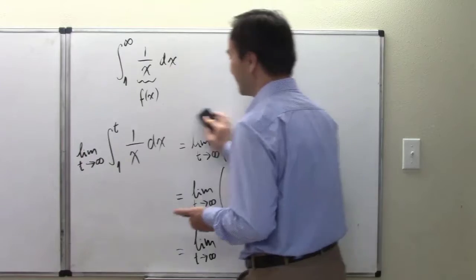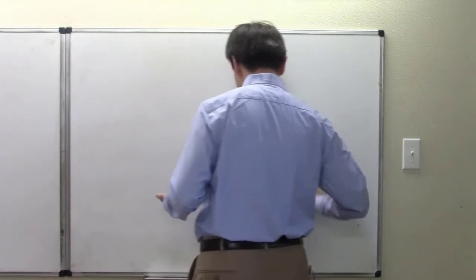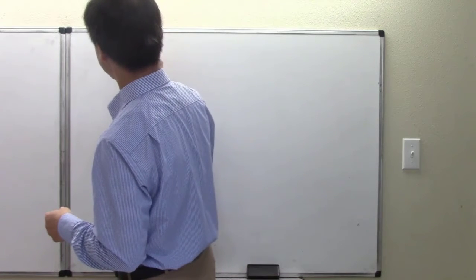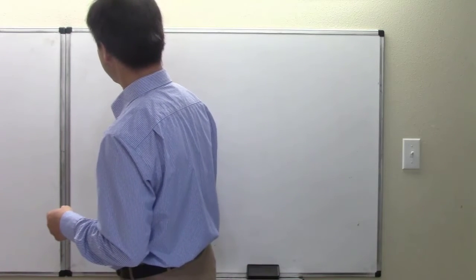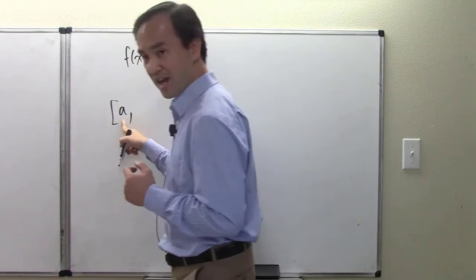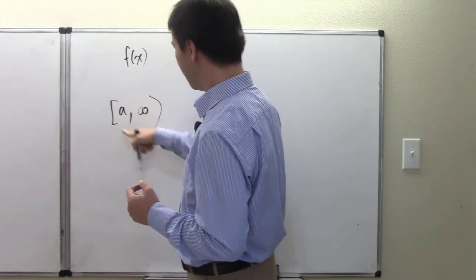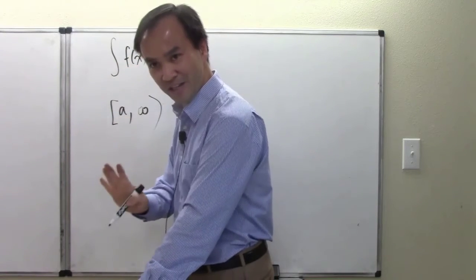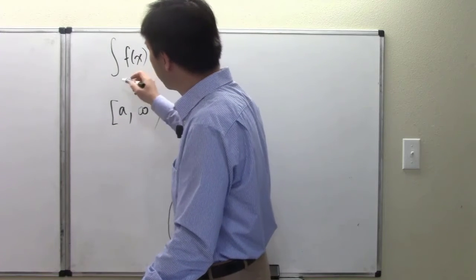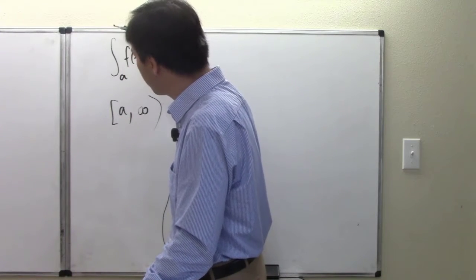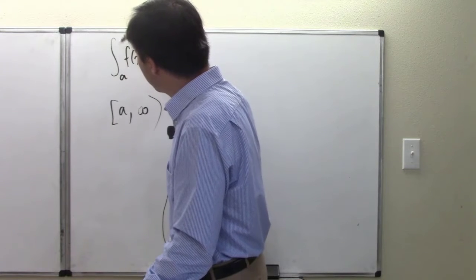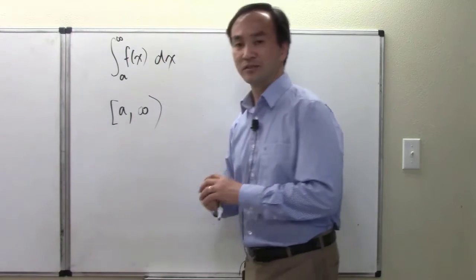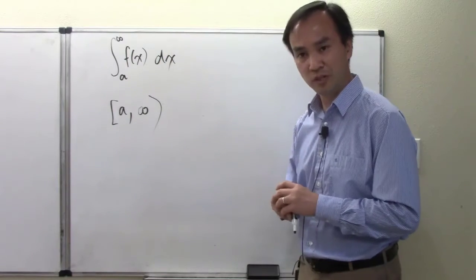We have seen the form where we integrate from a finite lower limit to infinity. That's the improper integral from a to infinity on a function. Now, outside of that, there's another form.